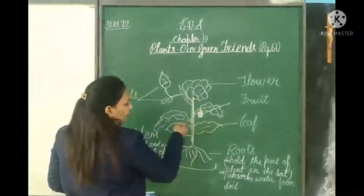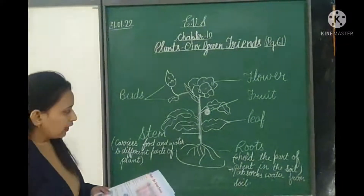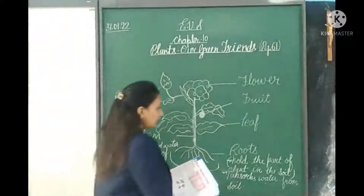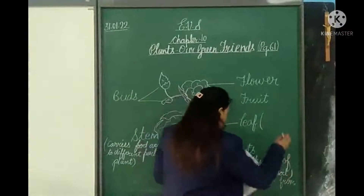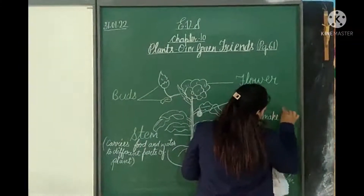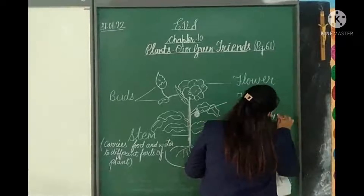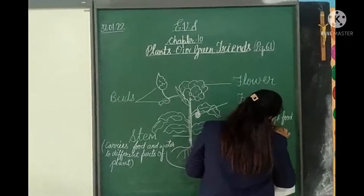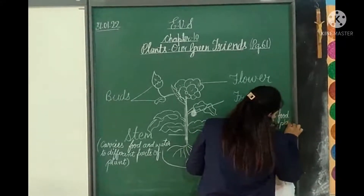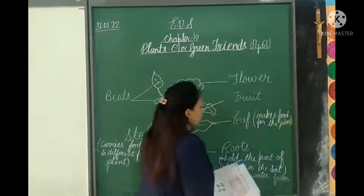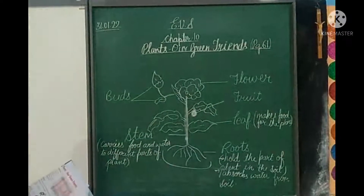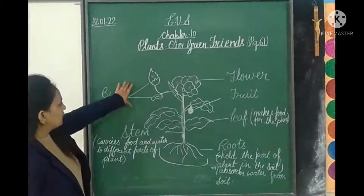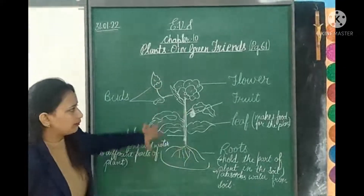Now let's see what is the role of the leaf. The leaf is also known as the kitchen of the plant, because it makes or prepares food for the plant.